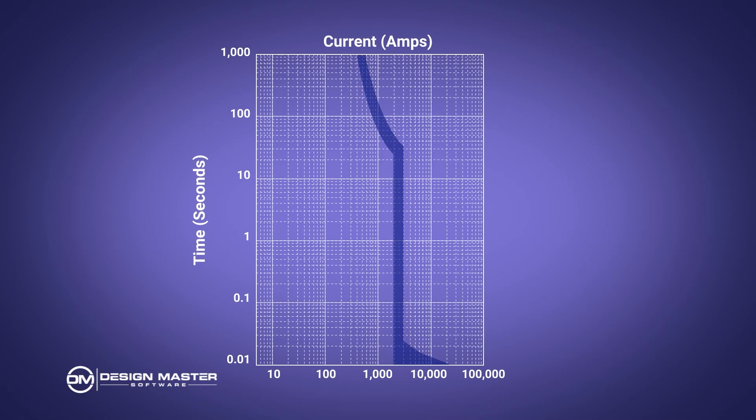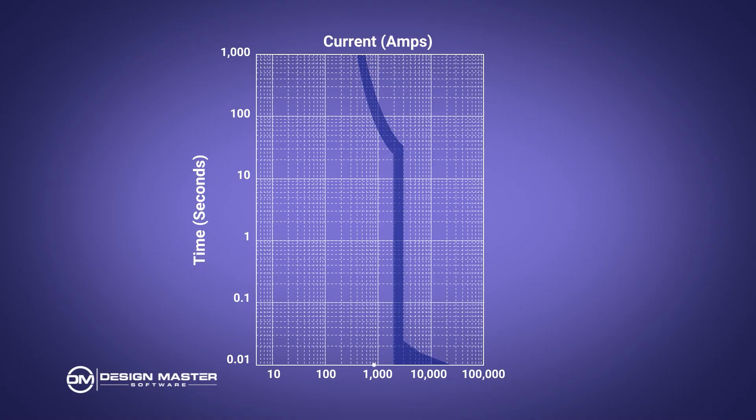For this video I'm going to assume that you are familiar with time current curves. If you have questions on what they actually are, there are a lot of other videos out there on the basics. To quickly review: the vertical axis is time, the horizontal axis is current, and you have this curve for a breaker or a fuse that shows you for a given current what time it is going to trip.